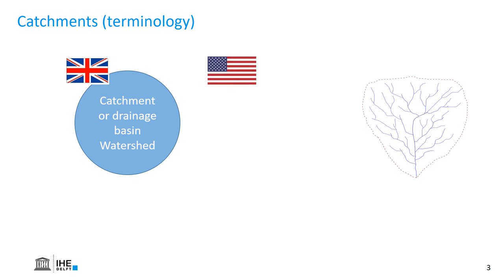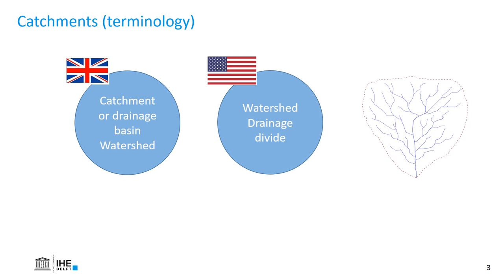In US English, this is a bit different. Watershed refers to the area for which all the water drains to one outlet, and the red dotted line is called the drainage divide.